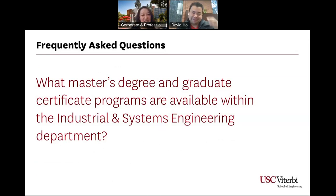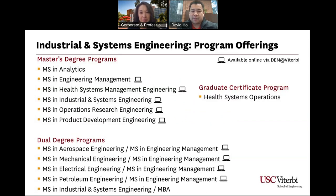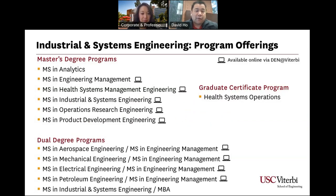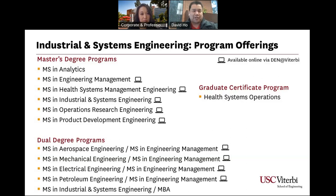What master's degrees and graduate certificate programs are available within the industrial systems engineering department? We have 6 primary master's programs and dual degree programs. One thing to pay close attention to is the computer icon, which means the program is available online via the Distance Education Network at Viterbi. Currently the two programs that don't allow online are the analytics program and the dual degree program at the bottom. We're working toward moving analytics online, as it consists of over half our master's-level population. All other programs are offered online and on-campus, but analytics is currently just on-campus.